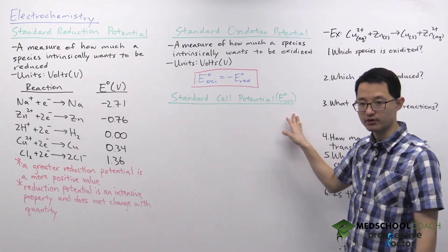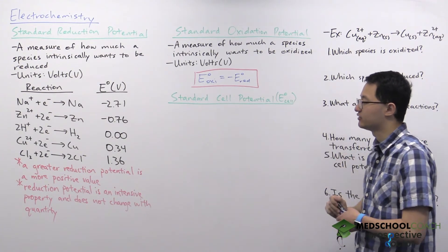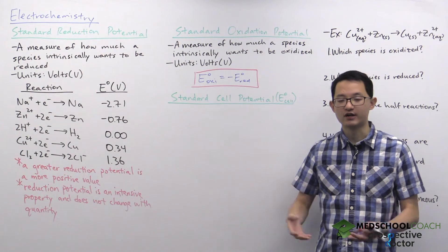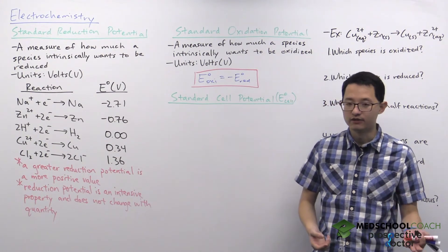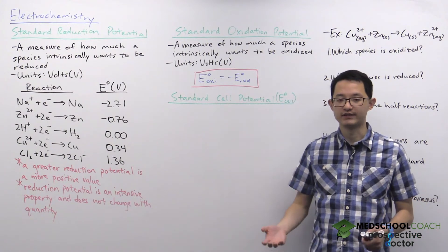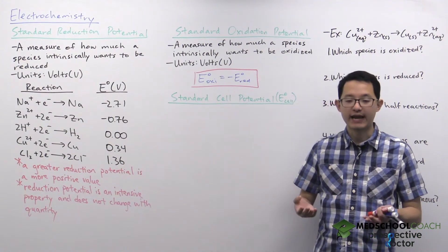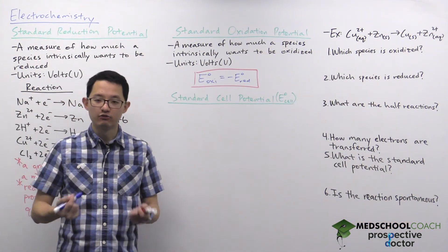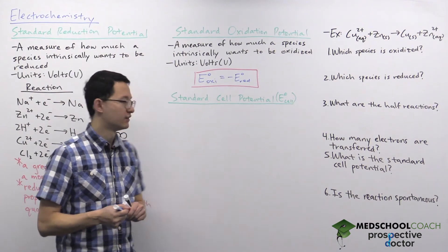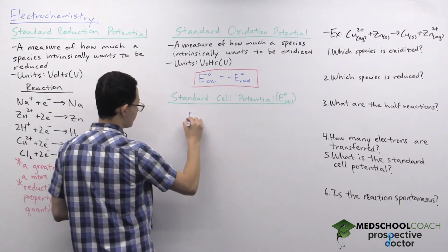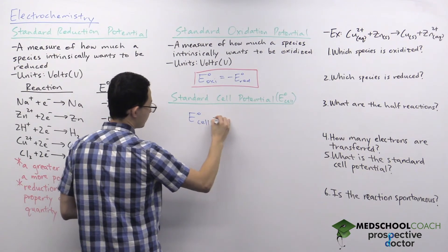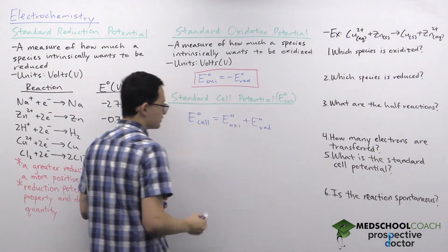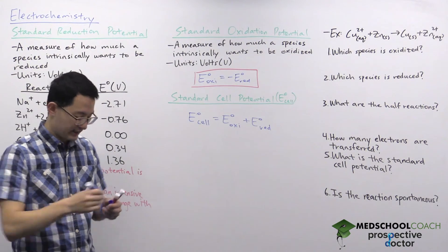Now let's talk about the standard cell potential. Redox reactions — reduction-oxidation reactions — always involve both reduction and oxidation together; you never have one without the other. So if you want to determine how favorable a redox reaction is, you need to consider both the reduction potential and the oxidation potential. The cell potential is simply the sum of the oxidation potential of the species being oxidized and the reduction potential of the species being reduced.